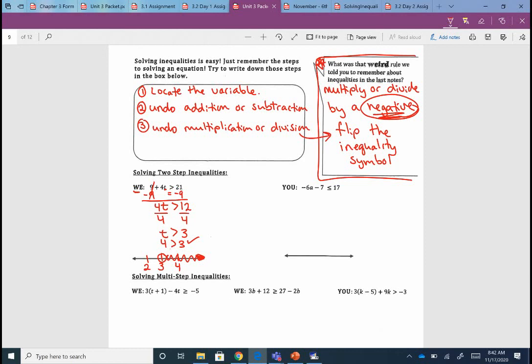I just want to do one more together. In the second one we've got locate the variable. There's my A right there. It says to undo addition or subtraction. I see subtraction. So to undo subtraction we're going to add. Negative 7, positive 7, that gives me the 0 I need. I have negative 6A, I have less than or equal, and I have 24.